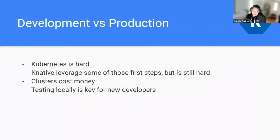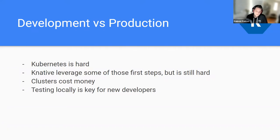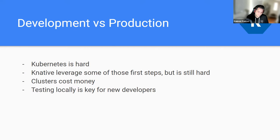Why I'm doing this talk: Kubernetes is hard — it's not as simple as frontend or backend to learn. There is a steep first-step learning curve, and this talk is aimed at new developers to know how to deploy, build things, and start breaking things locally, because Knative levels some of those first steps. Also, clusters cost money, and not all companies or developers want to deal with unexpected AWS surprise billing. So testing locally is key for getting new developers started.